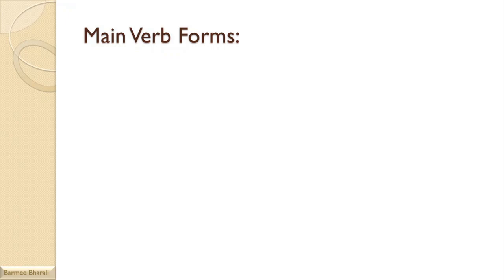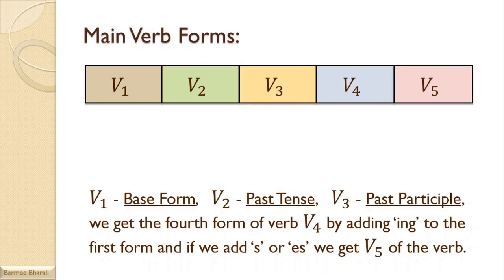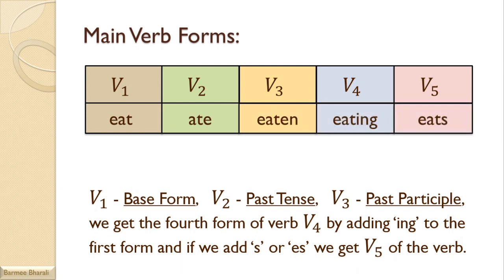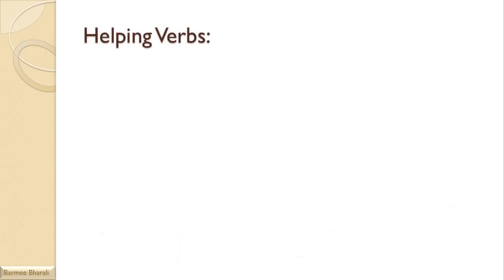The main verb forms used in tenses are the five forms of verb: V1 (base form or present tense), V2 (past tense), V3 (past participle). We get the fourth form V4 by adding '-ing' to the first form, and if we add 's' or 'es' we get V5. For example, the verb 'eat': V1 is 'eat,' V2 is 'ate,' V3 is 'eaten,' V4 is 'eating,' V5 is 'eats.' Similarly, 'go,' 'went,' 'gone,' 'going,' 'goes.'